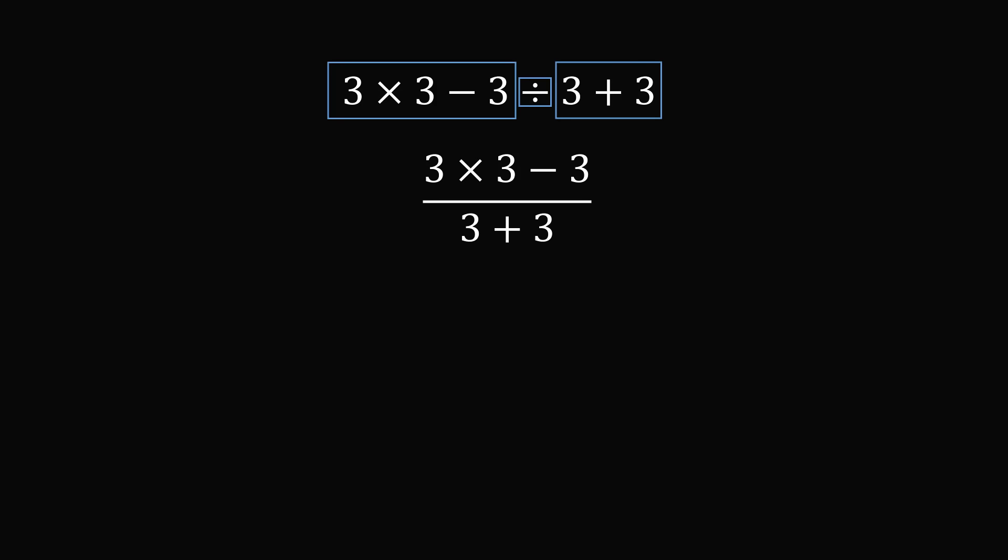So under this interpretation, you would have the following fraction: 3 times 3 minus 3, all divided by 3 plus 3. Now we just need to simplify the numerator and the denominator.